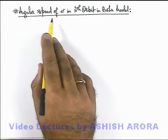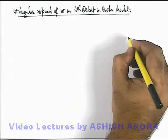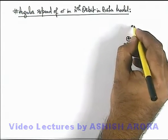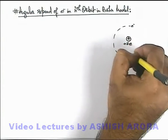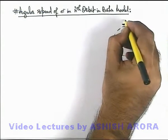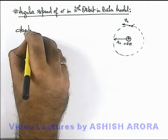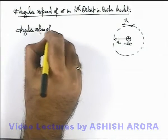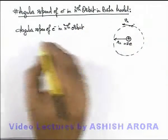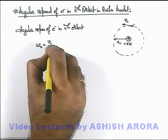Let us now study the angular speed of electron in the n-th orbit in the Bohr atomic model. In a hydrogenic atom, if the nuclear charge is +Ze and an electron is revolving around the nucleus in the n-th orbit, the radius of this orbit is r_n and the velocity of the electron is v_n. Then the angular velocity, or angular speed, of the electron in the n-th orbit is given as omega_n = v_n / r_n, since it is moving with uniform speed as per the model.